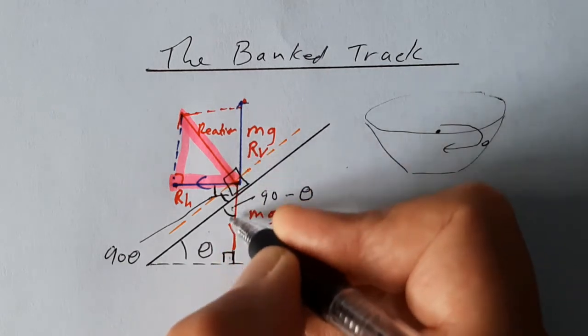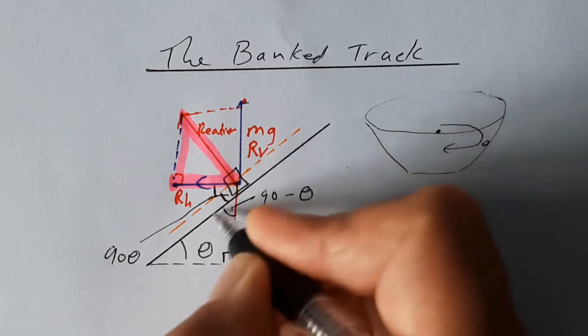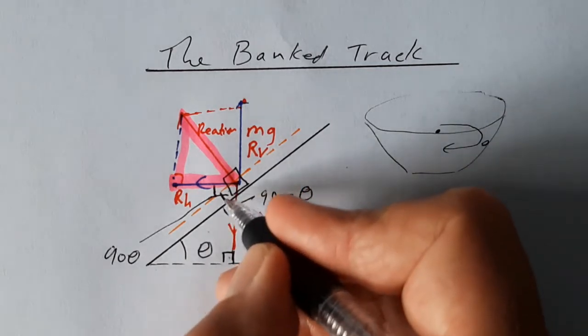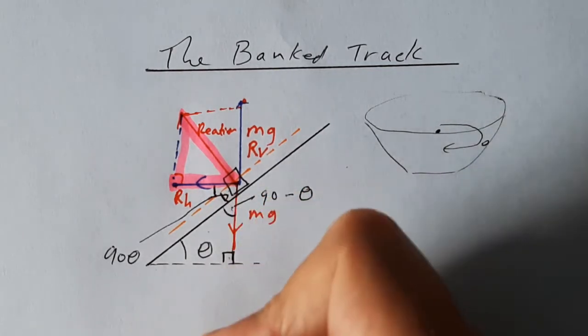Because that angle there and that angle there are Z angles, aren't they? We've got the blue and the red forms a straight line. The orange is parallel to the black, so there's a Z angle there. That angle there is 90 minus theta.